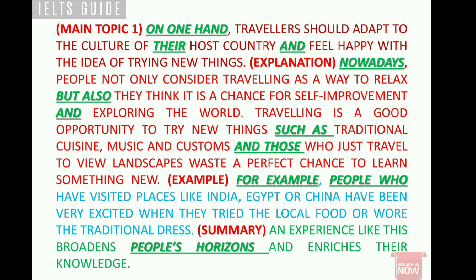For cohesion, you should use linking words. Looking at an example from a previous video: on one hand, nowadays, but also, such as, for example — all these show your knowledge of cohesion. Linking words and phrases start paragraphs, join ideas, introduce examples, and show relationships. Examples also demonstrate substitution and pronoun use, which are really important.